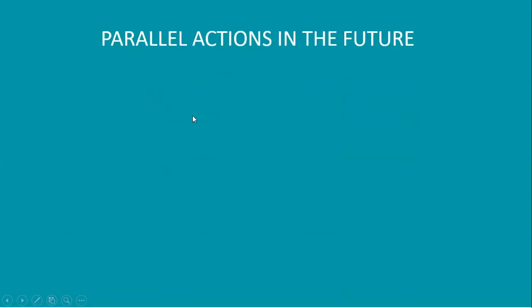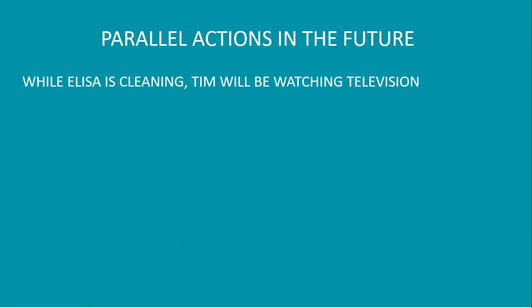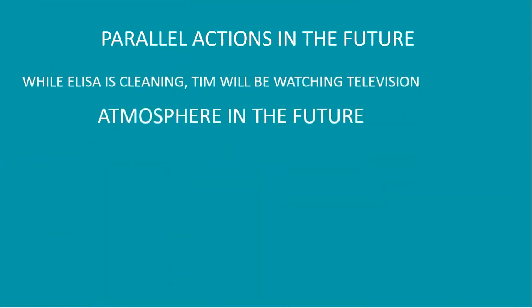To talk about parallel actions in the future: 'While Eliza is cleaning, Tim will be watching television.' When you use the future continuous with two actions in the same sentence, it expresses the idea that both actions will be happening at the same time. The time clause 'while' is used here.